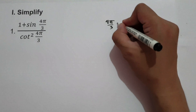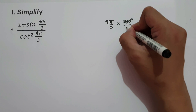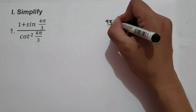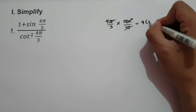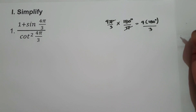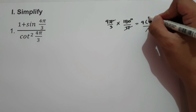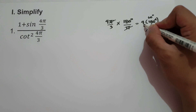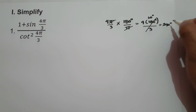Let us multiply by 180 degrees over π to convert into degrees. Canceling π, we have 4 times 180 degrees divided by 3. 180 degrees divided by 3 is 60 degrees, and 60 degrees times 4 is 240 degrees.